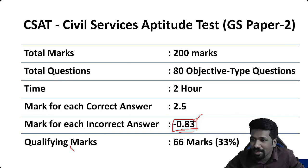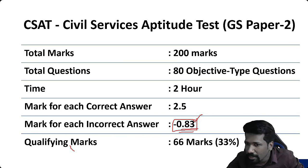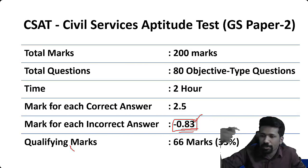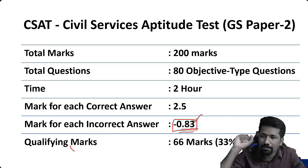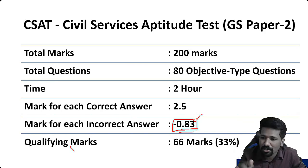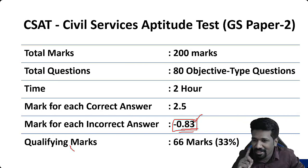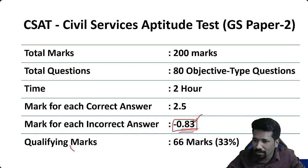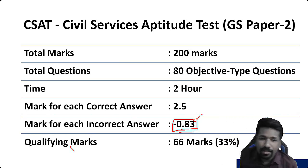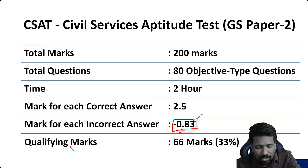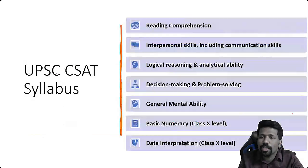In the exam, you should confidently attempt minimum 40 questions out of 80, which means selecting one question out of every two. You have the choice to skip difficult questions. Additionally, you can try 5 to 10 more questions where you're almost sure but not fully confident. So the minimum attempt target is 40 questions.